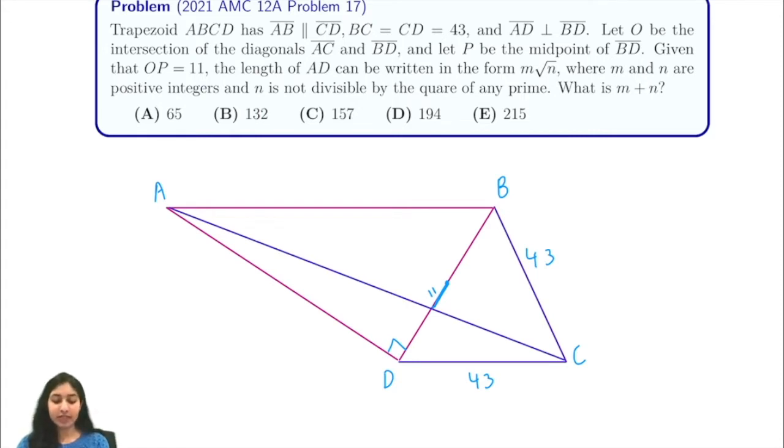It tells us that a trapezoid ABCD exists with AB parallel to CD, BC equals CD equals 43, and AD perpendicular to BD.